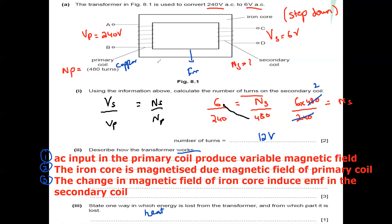The coils are mainly made up of copper and the core is made up of iron. Heat is produced by the copper coil. Also, heat can demagnetize the core material, meaning the core may not be magnetized to the required level, reducing the output.